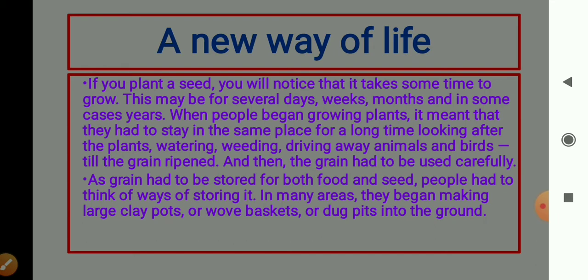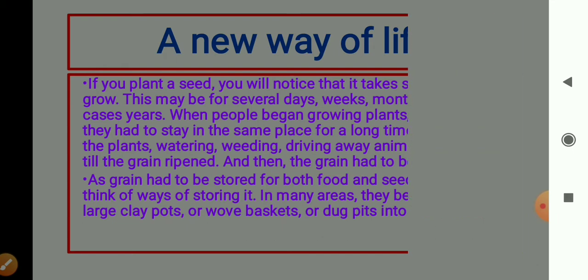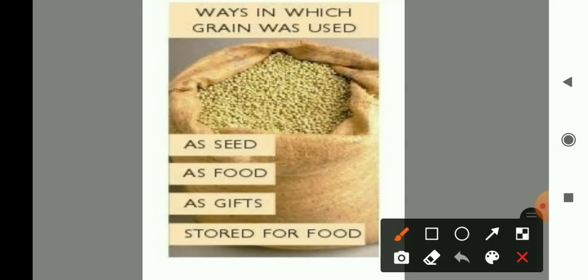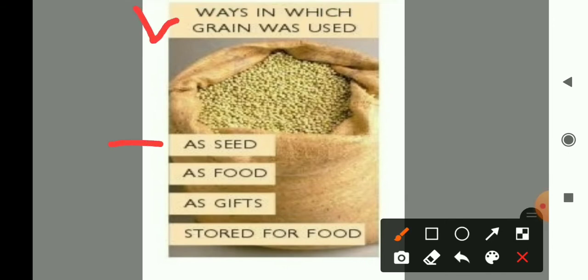In many areas, they began making large clay pots, wove baskets, and dug pits into the ground to store the grain. People stored grain in large pots, in baskets, and in pits in the ground to save it. Here you can see in the picture the ways in which grain was used — as seeds, as food, and as gifts.